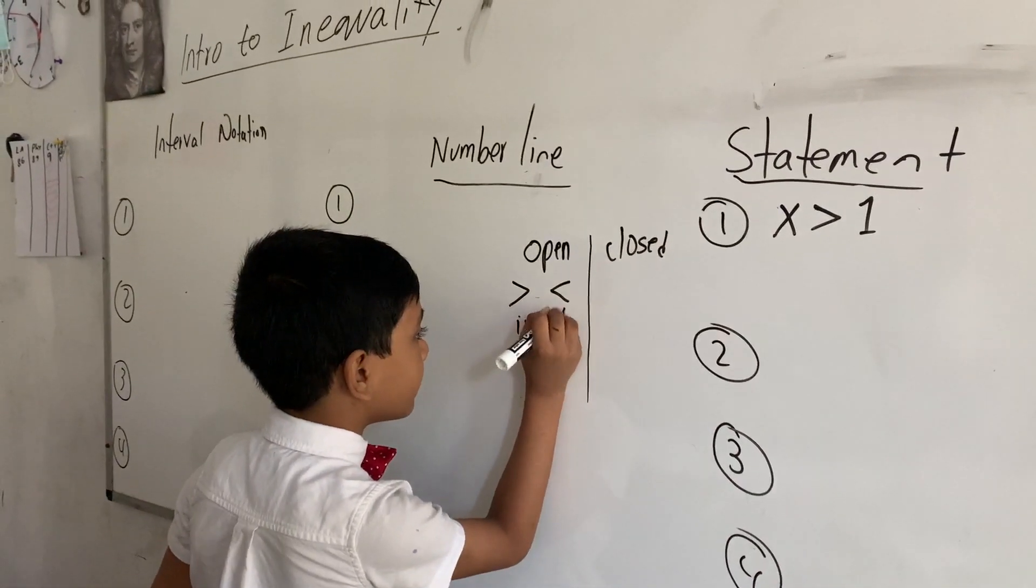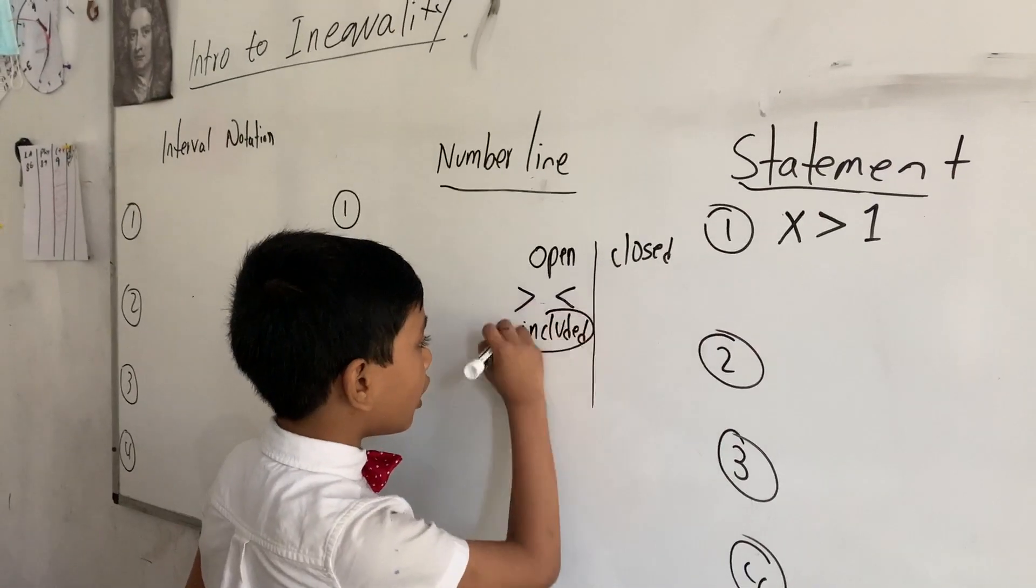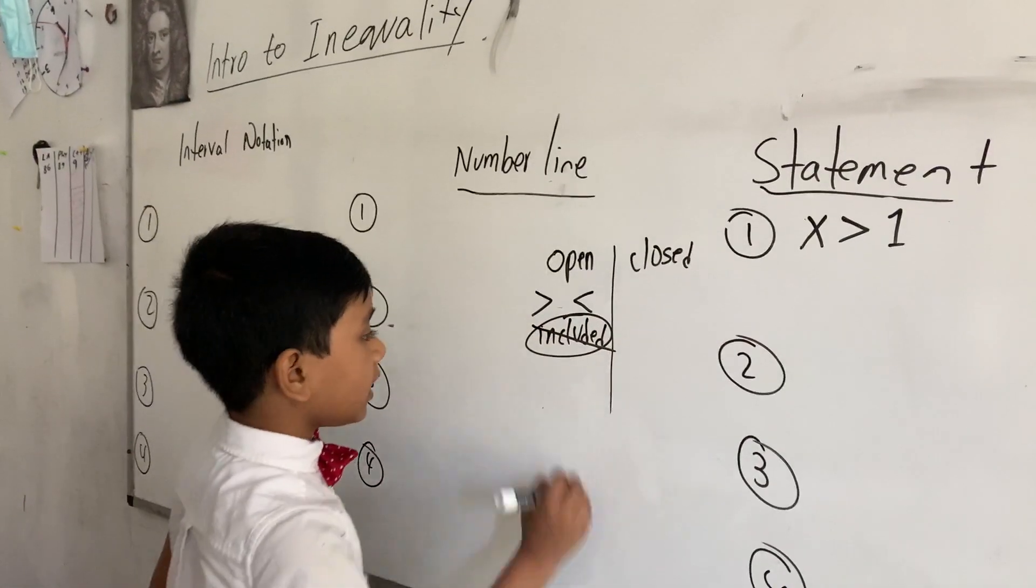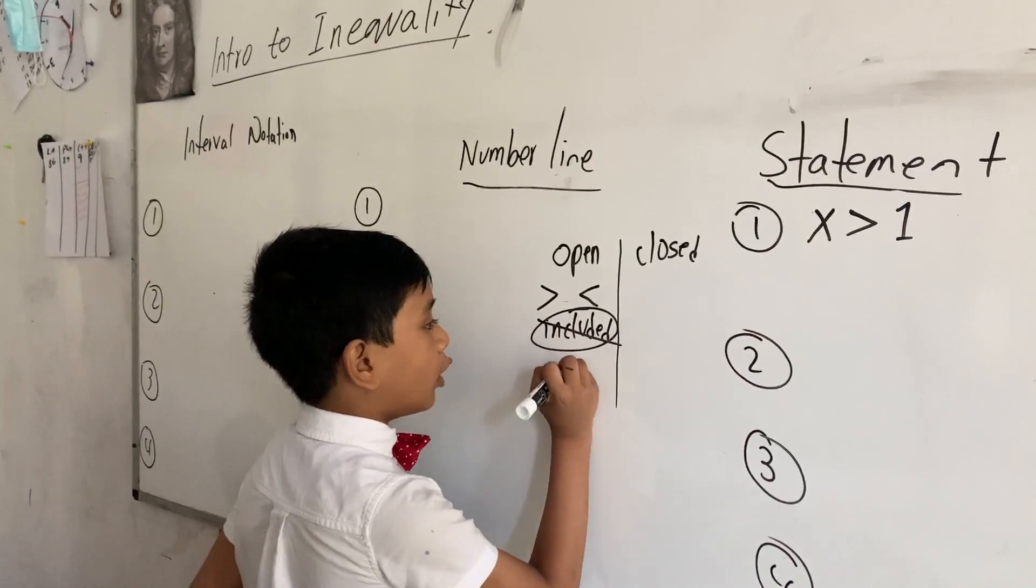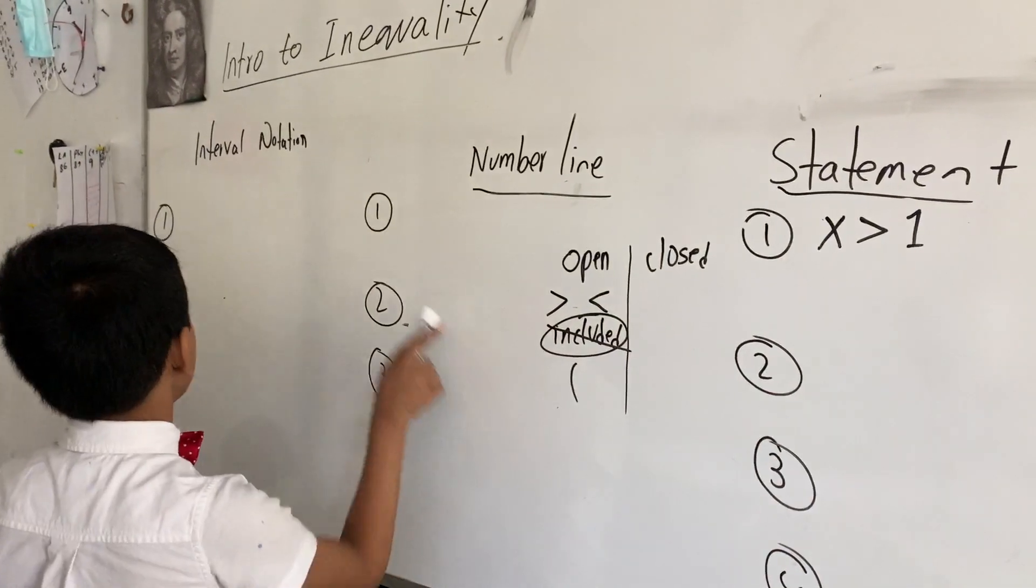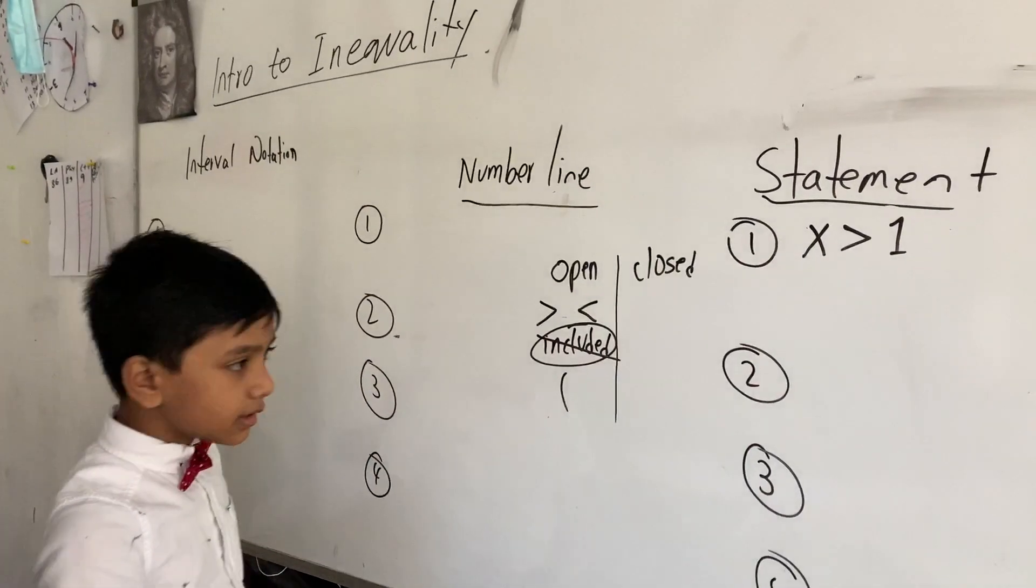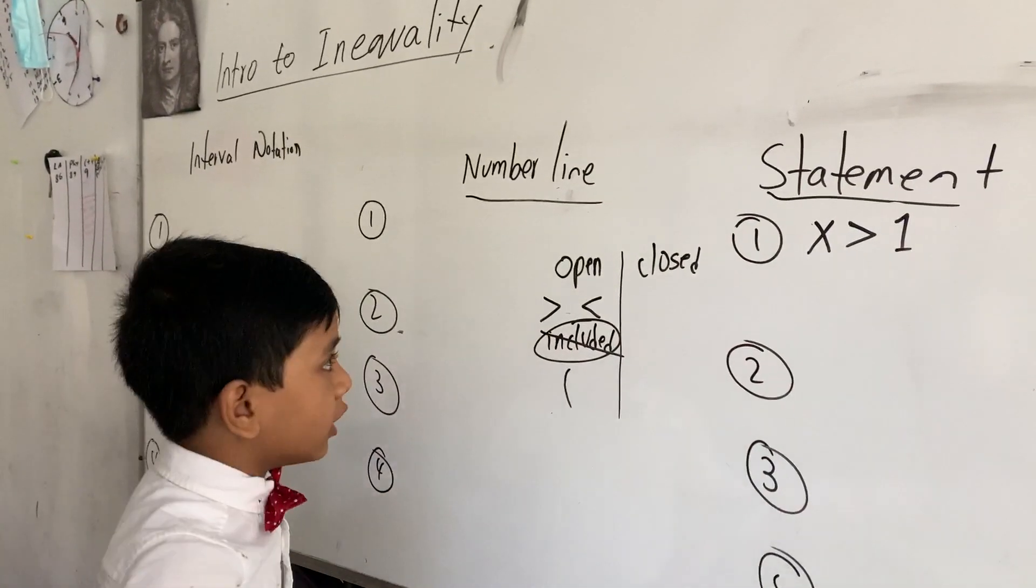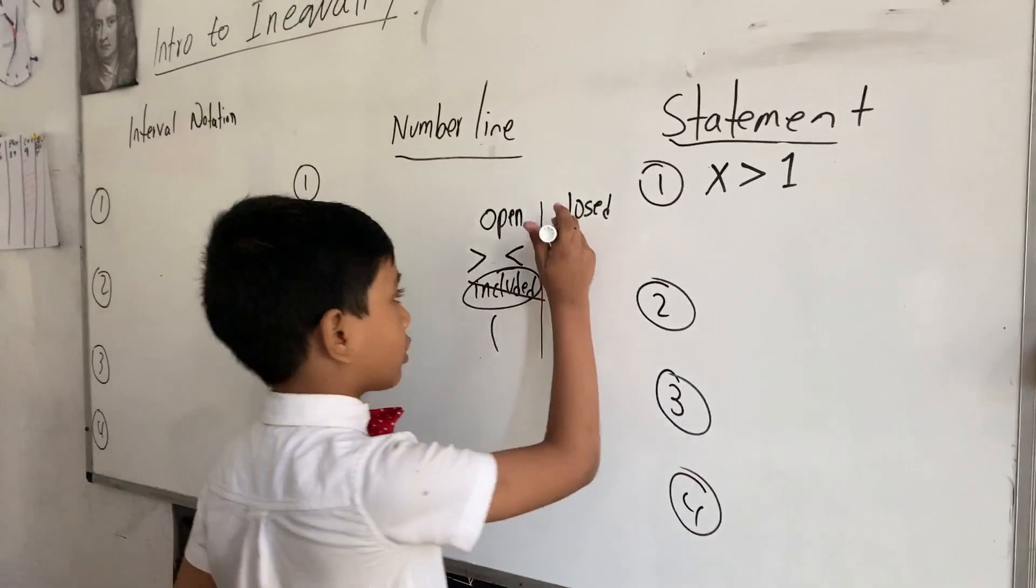So they are not included. And an open circle looks like this in the interval notation. You can put this next to an open number with an oval circle.